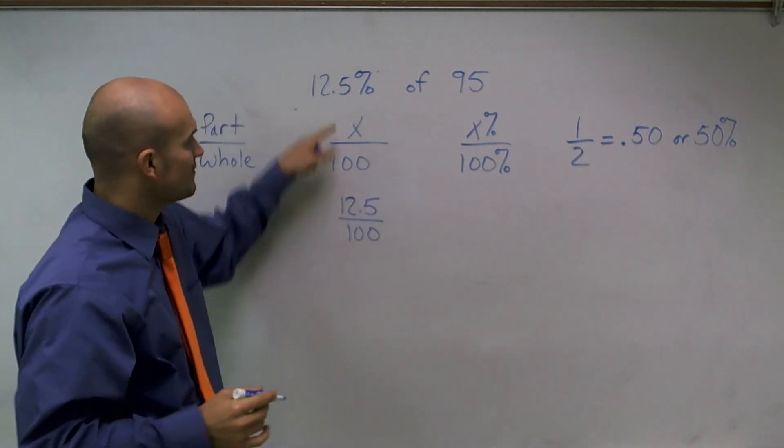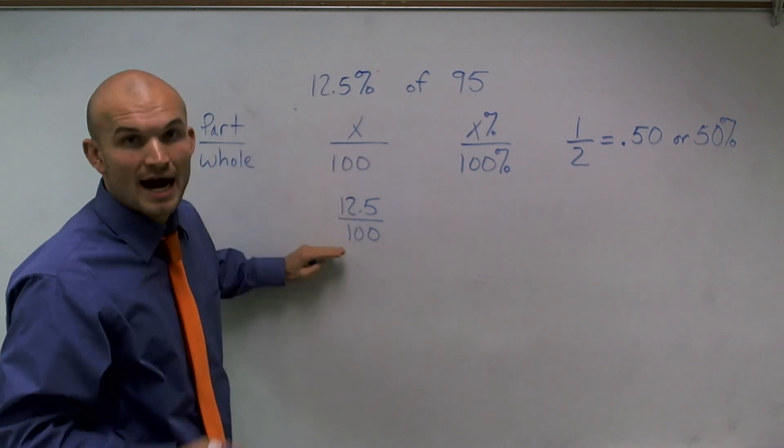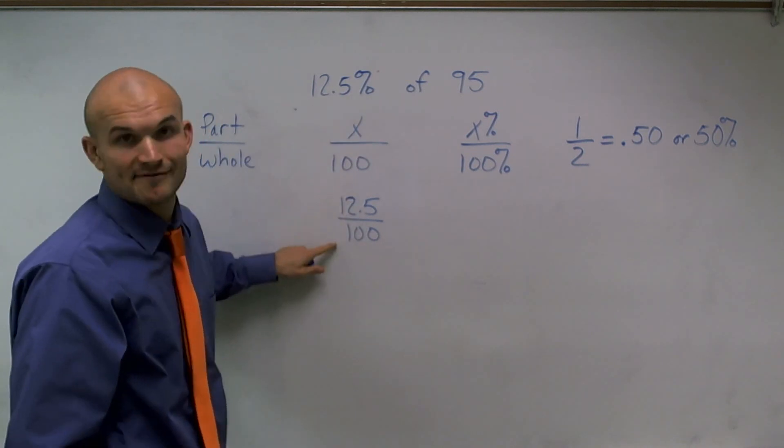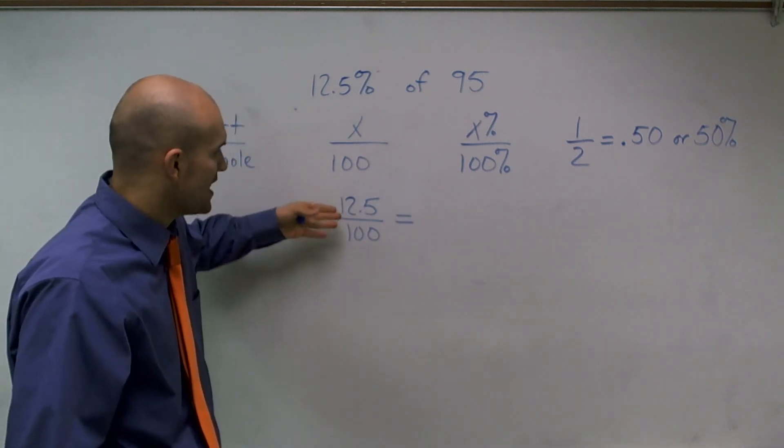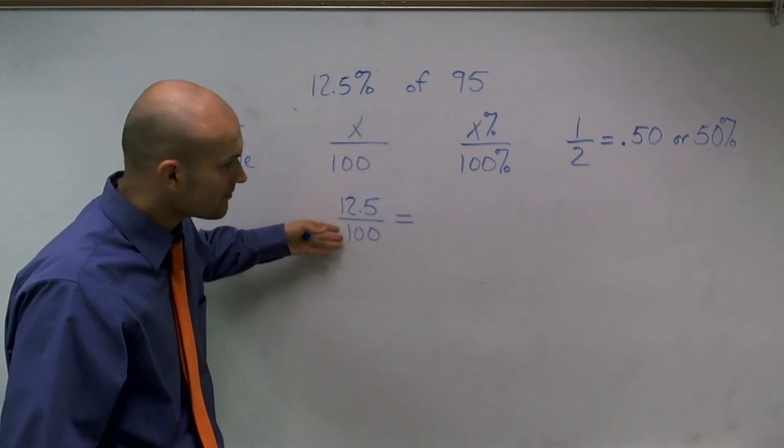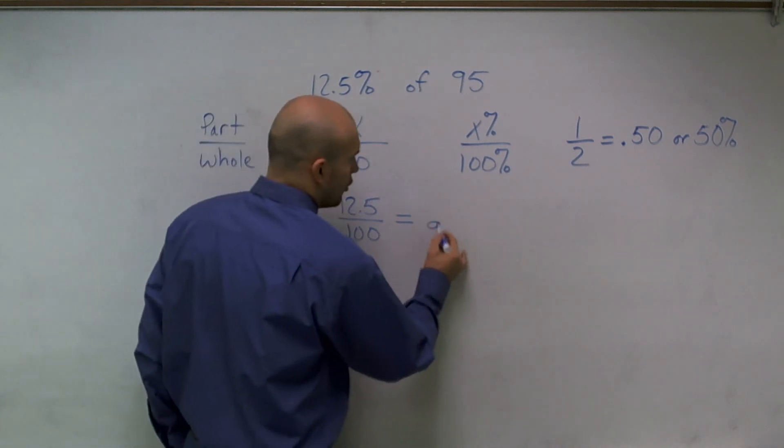Because 12.5 out of 100 is your percentage out of your whole. So that's your part out of your whole. And those are both the percentages. And what they're asking you is, well, if 12.5% out of 100,